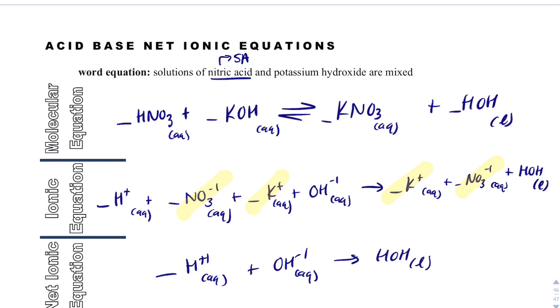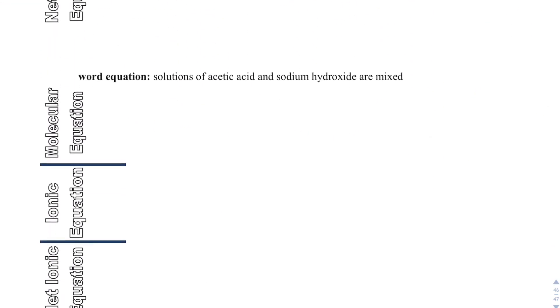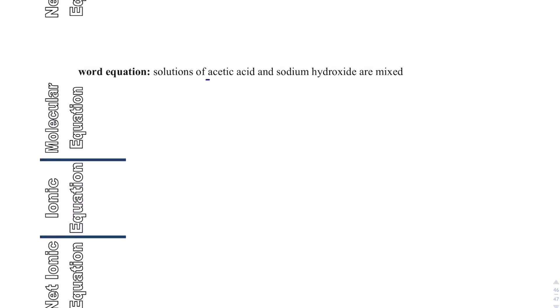Nothing terribly new here, but let's see what happens in this next example. We have acetic acid, so that's HC2H3O2, aqueous, plus sodium hydroxide, and that will form sodium acetate, plus HOH, liquid, and we're going to break it apart into its ionic equation. Acetic acid is a weak acid.